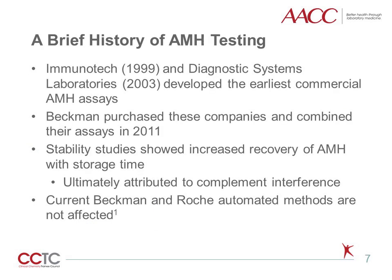The first commercial assays for anti-mullerian hormone were produced by Immunotech in 1999 and Diagnostic Systems Laboratories in 2003. Both companies were acquired by Beckman-Coulter by 2005, and in 2011, Beckman-Coulter introduced the GEN2-AMH assay. However, it was observed in stability studies that the apparent concentration of AMH increased over time, unusual for a directly proportional assay. Subsequent studies revealed that complement component C1Q from patient serum bound to the antibodies in the assay and activated complement via the classical pathway, resulting in steric hindrance that prevented AMH recognition. As specimens aged, complement degraded and this interference lessened, resulting in increased apparent AMH.